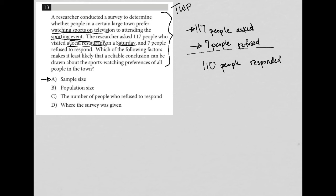Choice B is population size. Well, there's nothing about this question that gives us any data about the entire population of the town. So I'm gonna have to cross that out. So the question asked, which of the following factors makes it least likely? Well, population size is not a factor because we weren't given it.